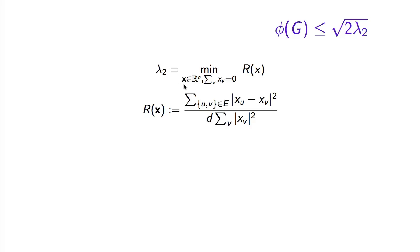We are going to use the variational characterization of lambda 2 as the minimum over all vectors that are orthogonal to the all-ones vector — equivalently, vectors whose entries sum to 0 — of the Rayleigh quotient of the vector, where the Rayleigh quotient is the summation over all edges of the squared difference of the vector values at the two endpoints, divided by the degree of the graph times the squared L2 norm of the vector.